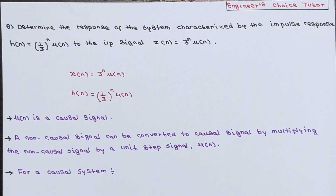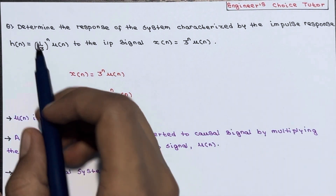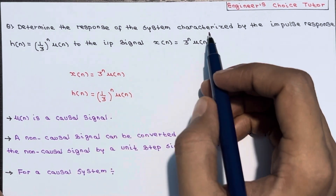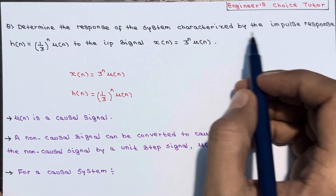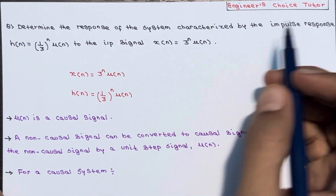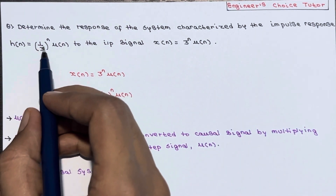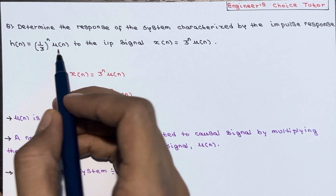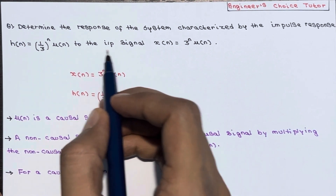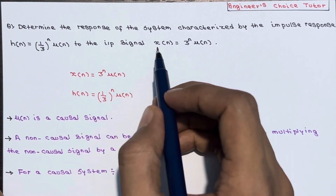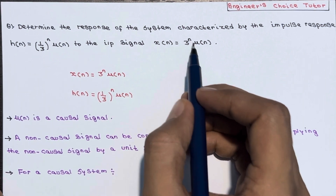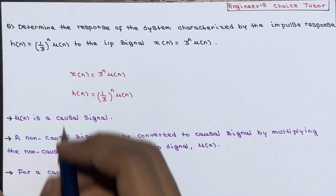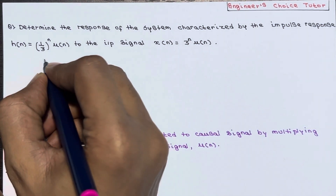In this lecture we will determine the response of the system characterized by the impulse response h(n) = (1/3)^n · u(n), to the input signal x(n) = 3^n · u(n).